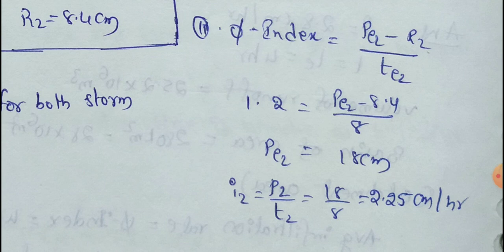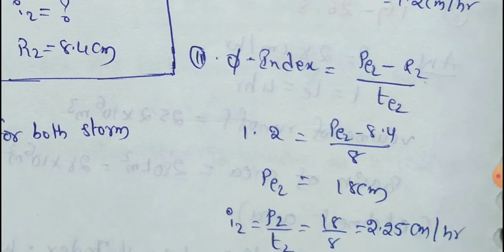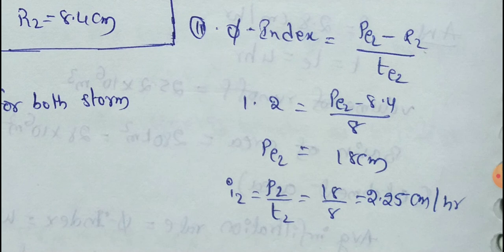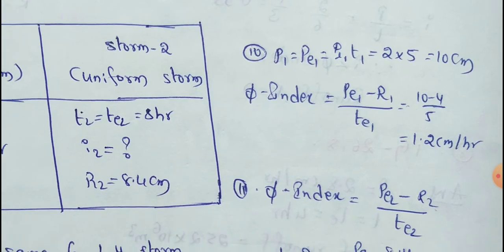We find out the intensity of the storm. Intensity i2 equals P2 divided by T2. The P2 value is 18 cm and T2 is 8 hours. So 18 divided by 8 equals 2.25 cm per hour. This is the intensity of the second storm.